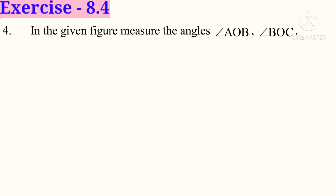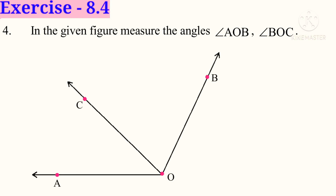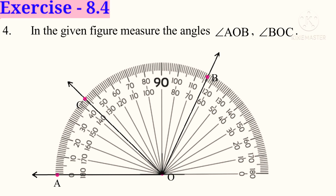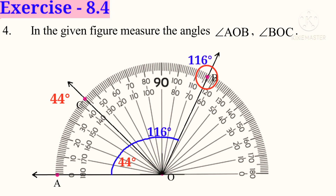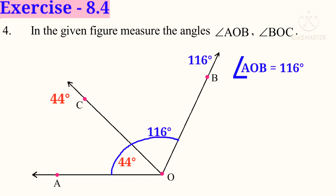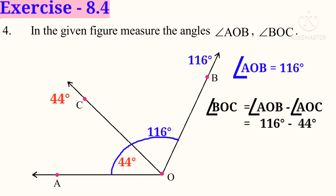Now fourth problem: in the given figure, measure angle AOB and angle BOC. Place the protractor on the line OA at center O. Read the upper scale: 0, 10, 20, and so on — four lines after 40, the ray OC is pointing, that is 44 degrees. The ray OB is pointing six lines after 110, that is 116 degrees. So angle AOB equals 116 degrees. Angle BOC equals angle AOB minus angle AOC, that is 116 minus 44 degrees, which equals 72 degrees.